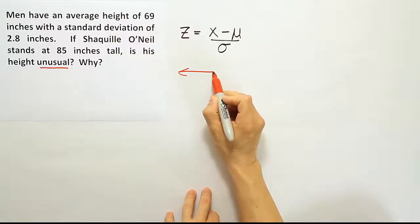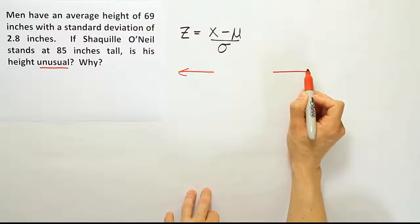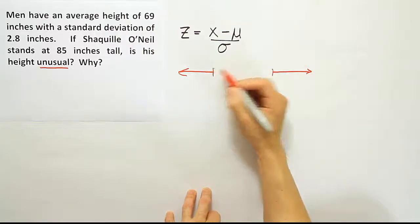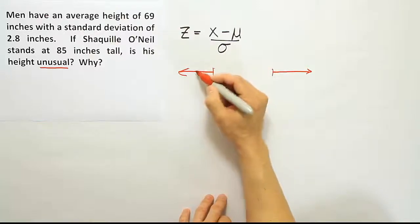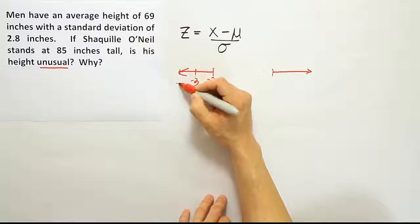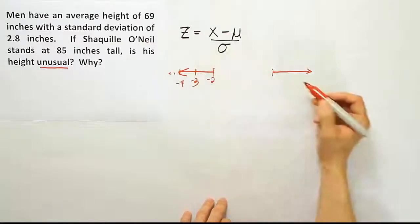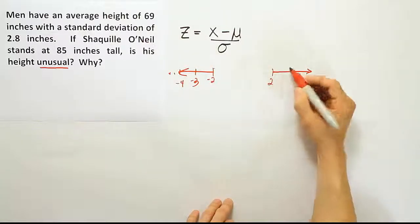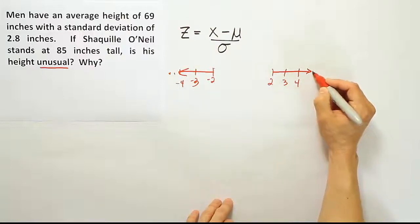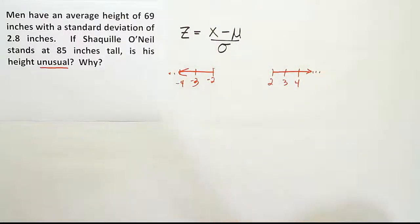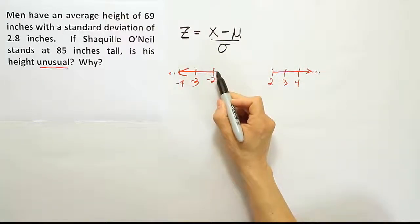On the number line, this is a z-score number line. Anything to the left of negative two—so negative three, negative four, dot dot dot—and anything higher than positive two, that'd be three, four, dot dot dot, anything outside of that range, or in that range in red, is going to represent something that's unusual.